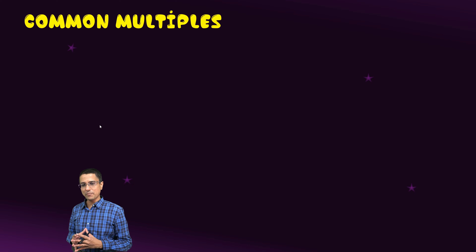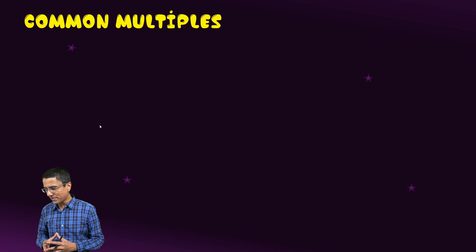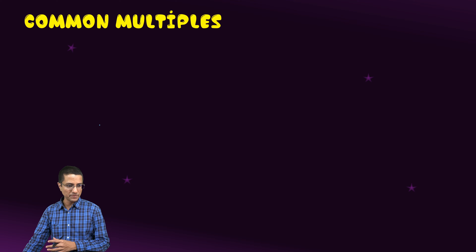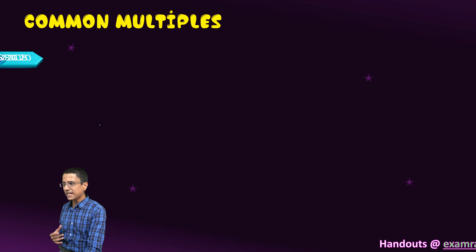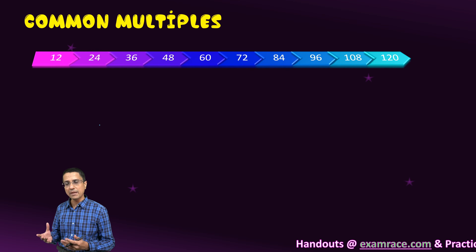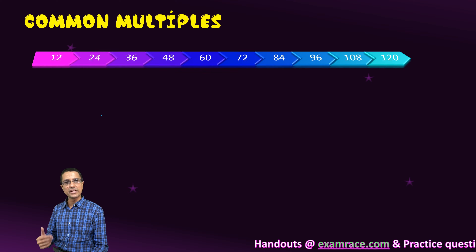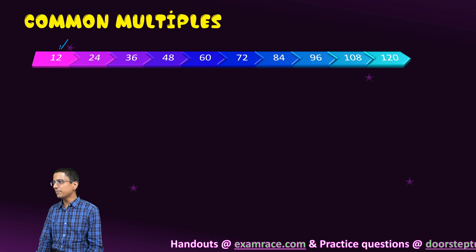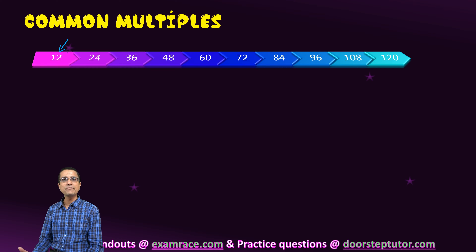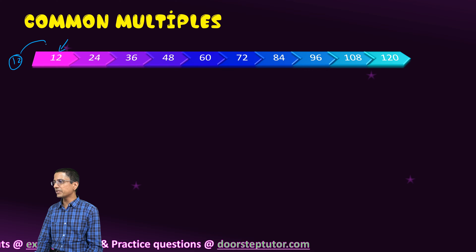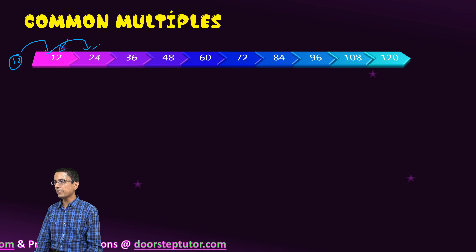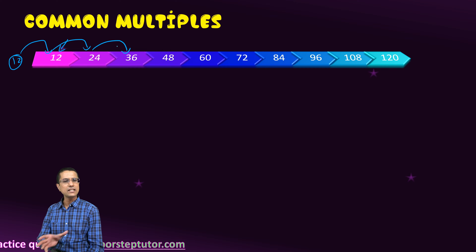Now let us look at the next very important concept which is common multiples. Multiples, as we already know, are the numbers as they appear in the table of other numbers. For example, to write the multiples of 12, I simply replicate the table of 12. So it will go as 12, 24, 36 and so on.